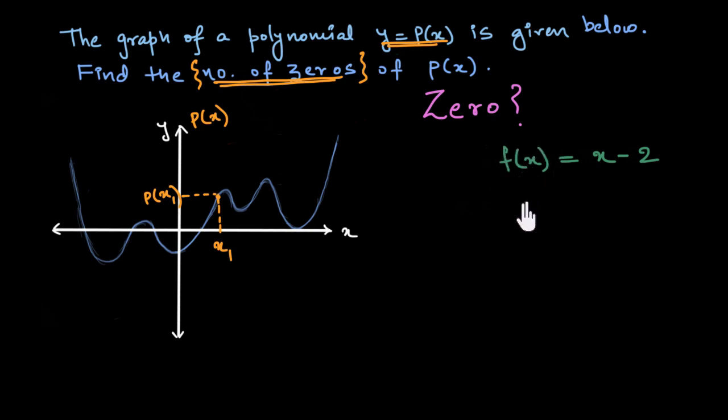So if I may ask you, for what value of x is the value of this polynomial equal to 0? So the answer would be x equals to 2. The moment we substitute 2 instead of x, the value of the polynomial would become 0. 2 minus 2 equal to 0.